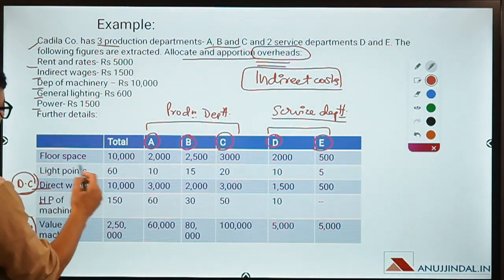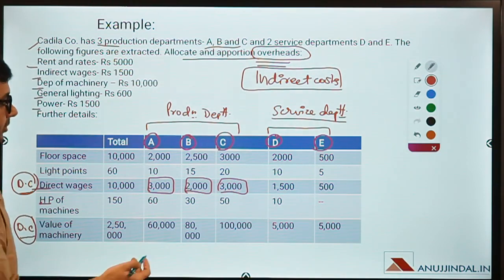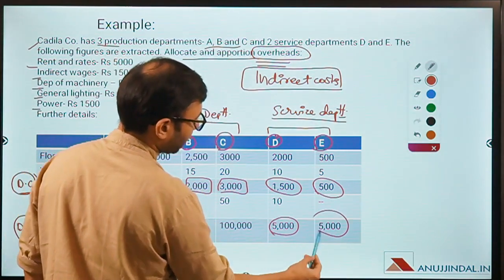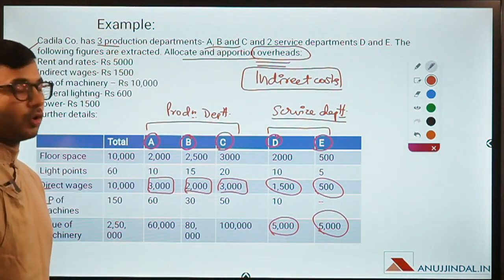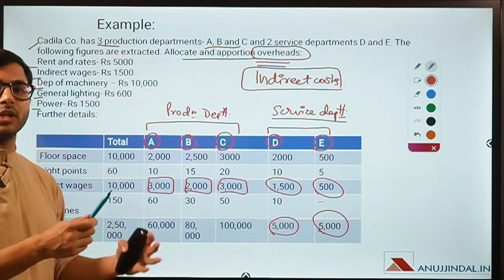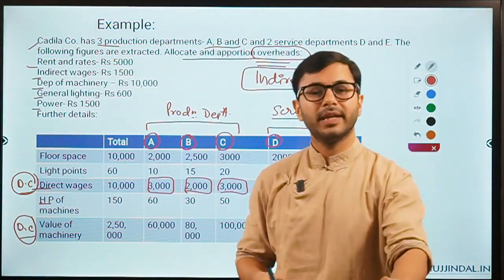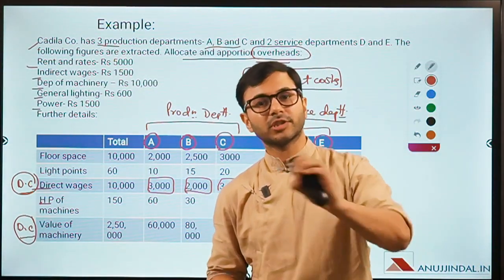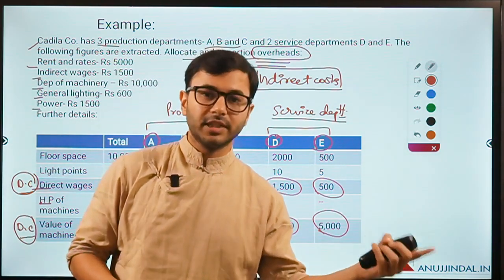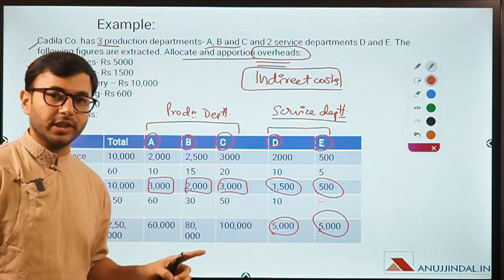Allocation of direct costs will not happen for the production departments A, B, and C because they come under direct expenses. However, whatever allocation of direct costs exists in the service departments will be considered an indirect cost there, because service departments don't have any direct costs — all their costs are overheads only. For example, even accounting charges or auditing charges allocated to a service department are all indirect costs.